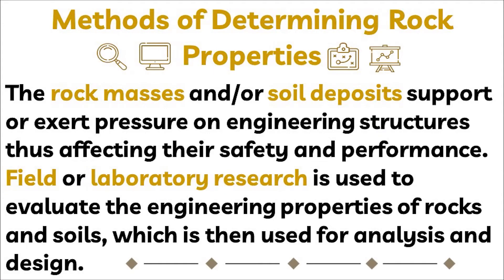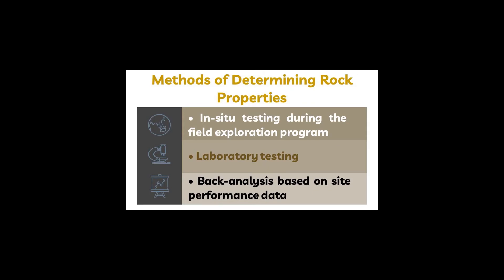Methods of Determining Rock Properties. Rock masses and soil deposits support or exert pressure on engineering structures, thus affecting their safety and performance. Field or laboratory research is used to evaluate the engineering properties of rocks and soils for analysis and design. Rock properties are generally determined using in-situ testing during field exploration, laboratory testing, and back analysis based on site performance data.